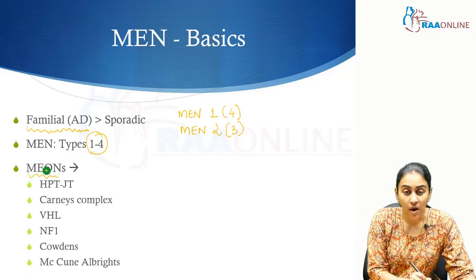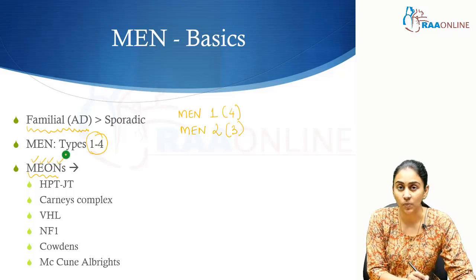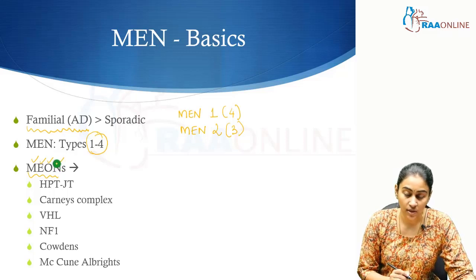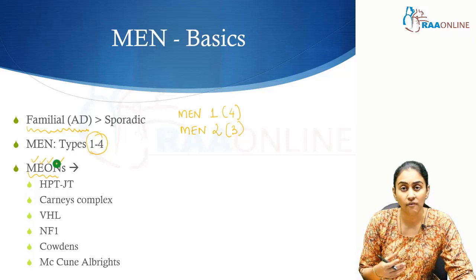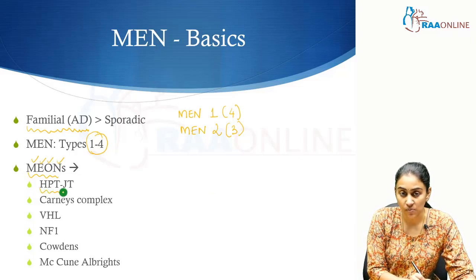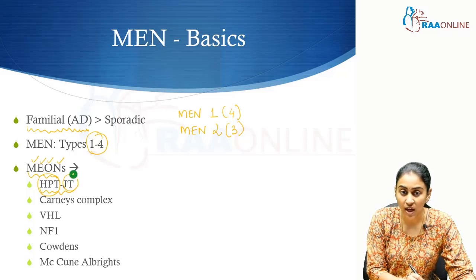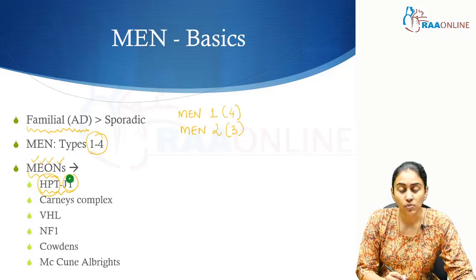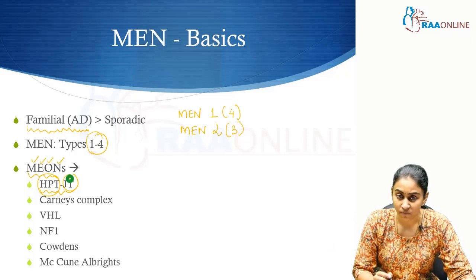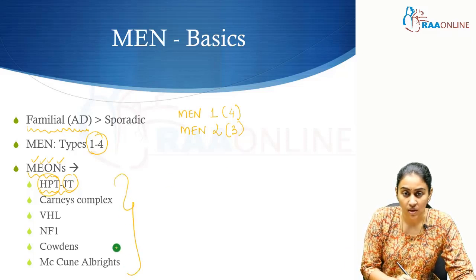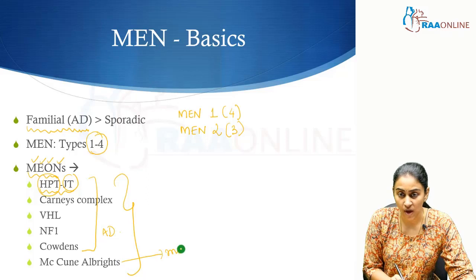What are MEONs? Multiple endocrine and other organ neoplasias. Here you have tumors not only involving the endocrine glands, but also tumors involving other non-endocrine organs. This is what constitutes MEONs. For example, you have the hyperparathyroidism jaw tumor syndrome — an endocrine problem in the form of parathyroid tumors causing hyperparathyroidism, and jaw tumors involving a non-endocrine part of the body. All of these syndromes, except McCune-Albright, are autosomal dominant. McCune-Albright alone is caused by mosaicism.